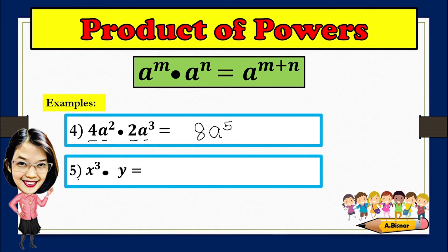For number 5, x cubed times y. As you can see, the variables are not the same, which means the bases are not the same. And if they are not the same, then we cannot add the exponents. So when you multiply x cubed times y, we will just simply combine them, and the answer will be x cubed y.